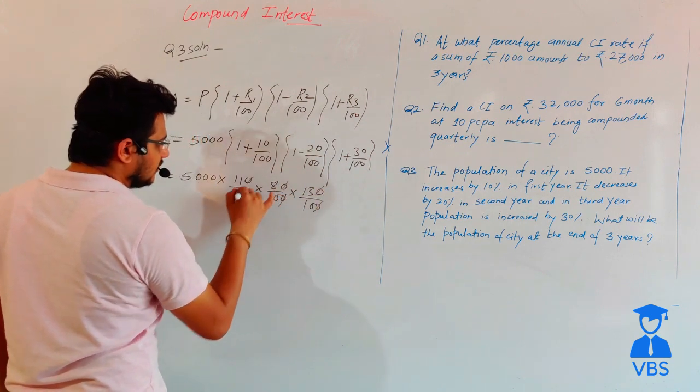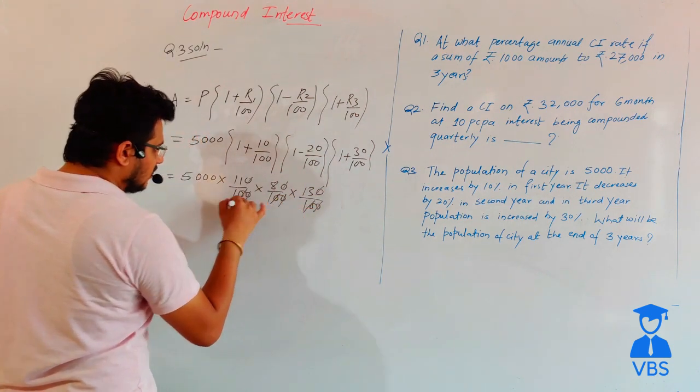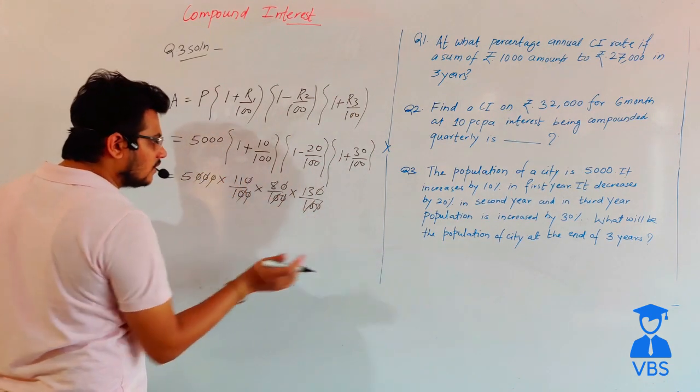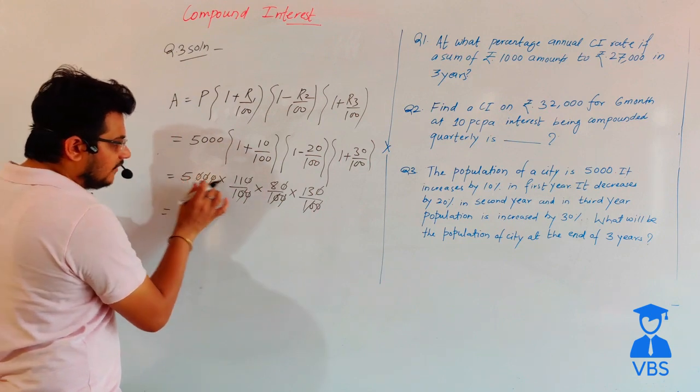After canceling zeros from the numerator and denominator, we get 50 times 11 times 8 times 13.